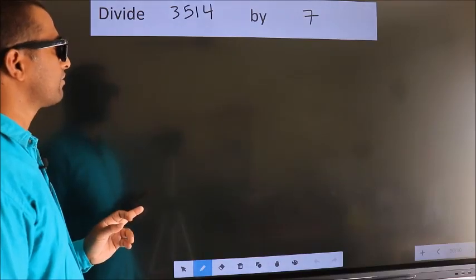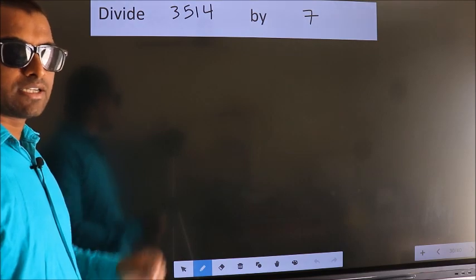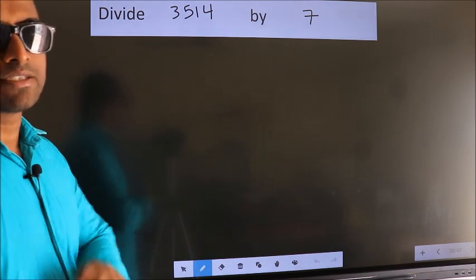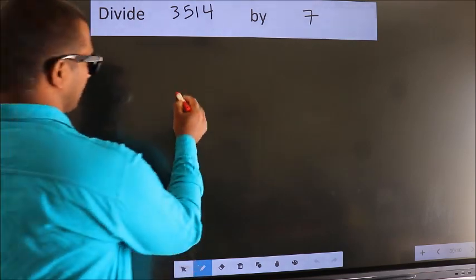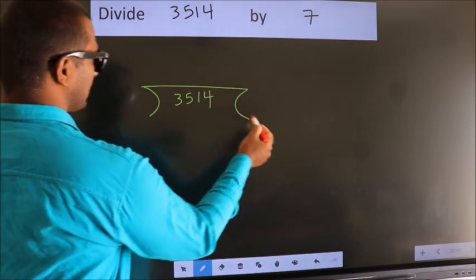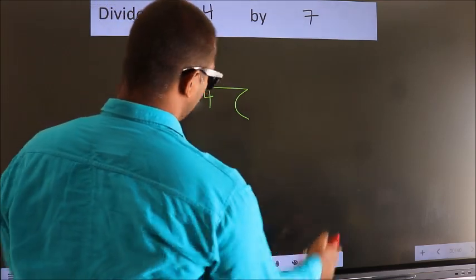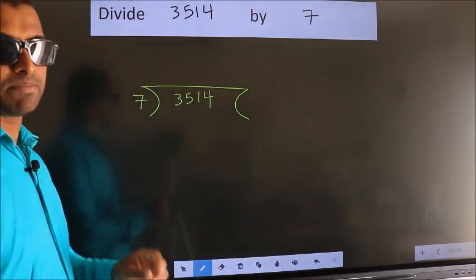Divide 3514 by 7. To do this division, we should frame it in this way. 3514 here, 7 here. This is your step 1.